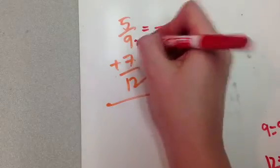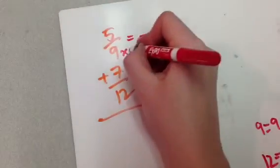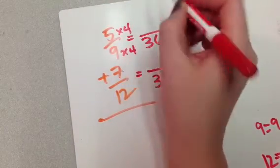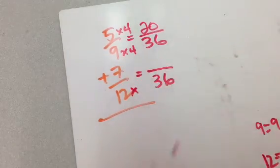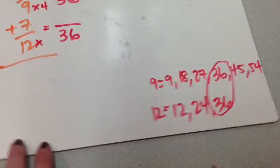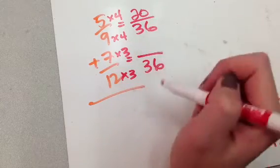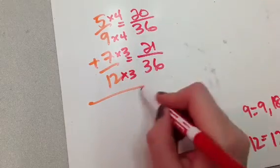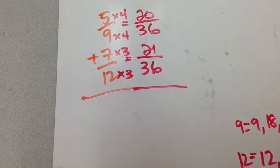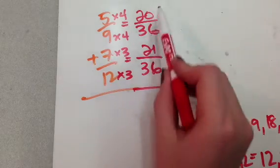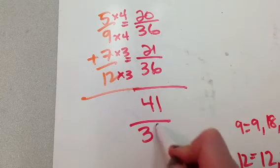So, nine times what got me to thirty-six? One, two, three, four. Right? So, I got to multiply the top number by four, which five times four is twenty. Twelve times something gave me thirty-six. One, two, three. So, twelve times three gives me thirty-six. So, now, seven times three. That gives me twenty-one. So, now I can finally add. After all of those steps, I can finally add. Twenty plus twenty-one is forty-one. Bottom number stays the same.